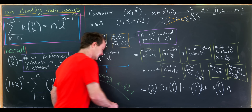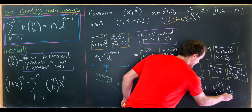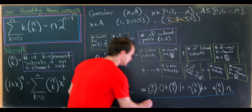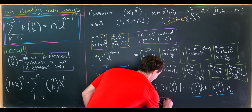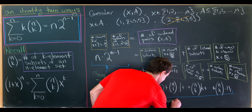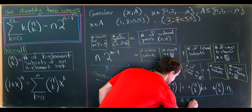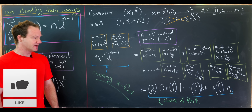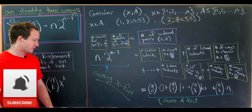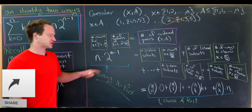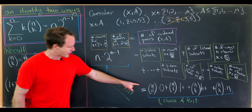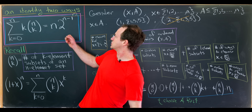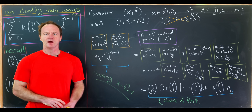Choosing a first gives us this sum. So depending on whether you choose x first or a first, you get the same count but in different forms. If we write that out in summation notation, we get right back to our identity: the sum as k goes from 0 to n of k times n choose k equals n times 2 to the n minus 1.